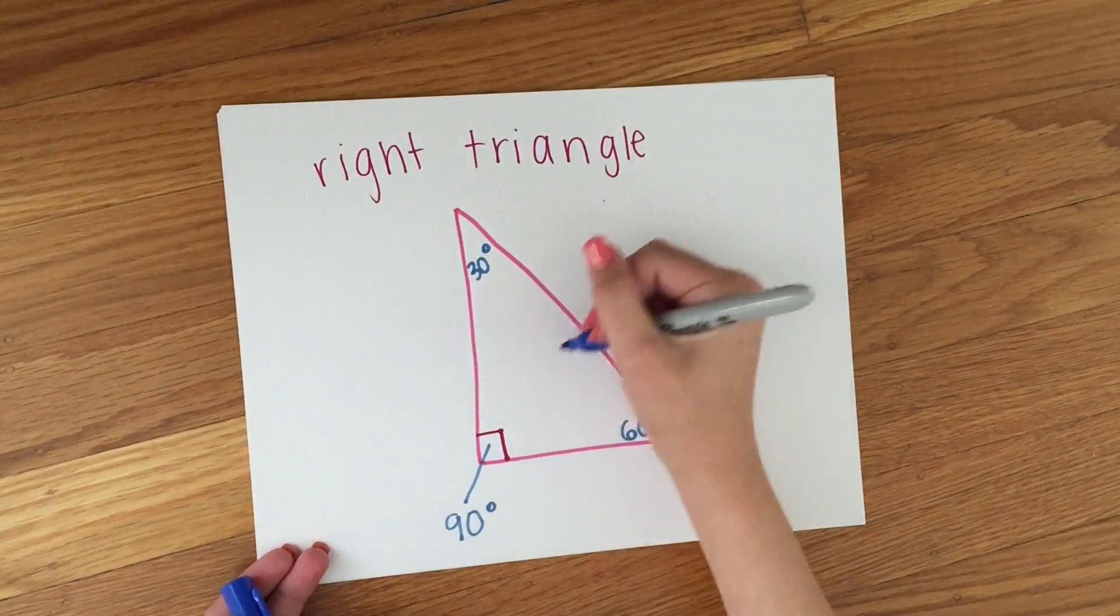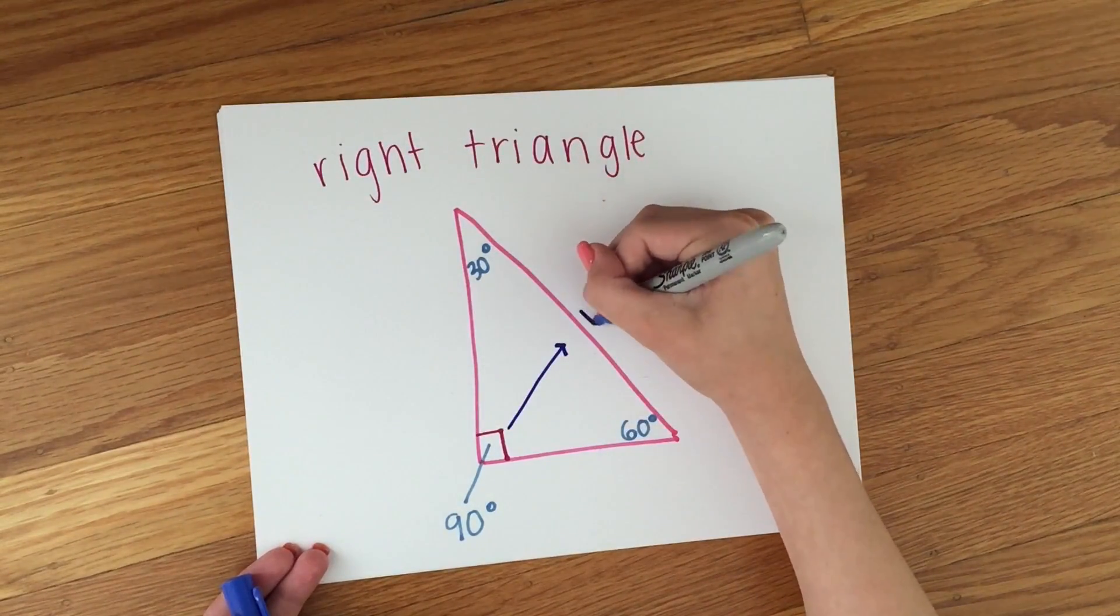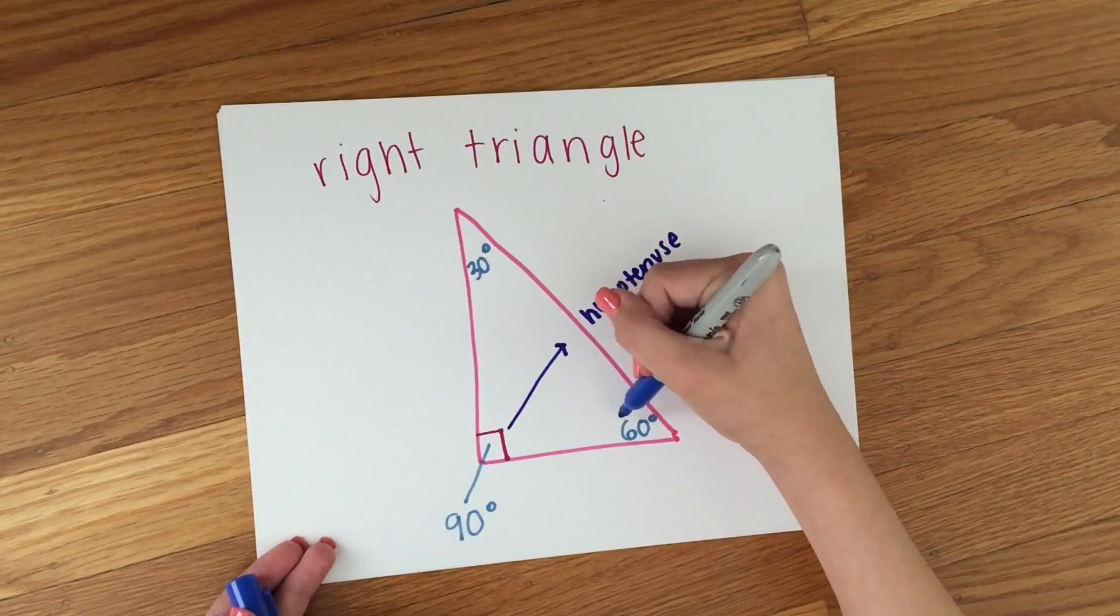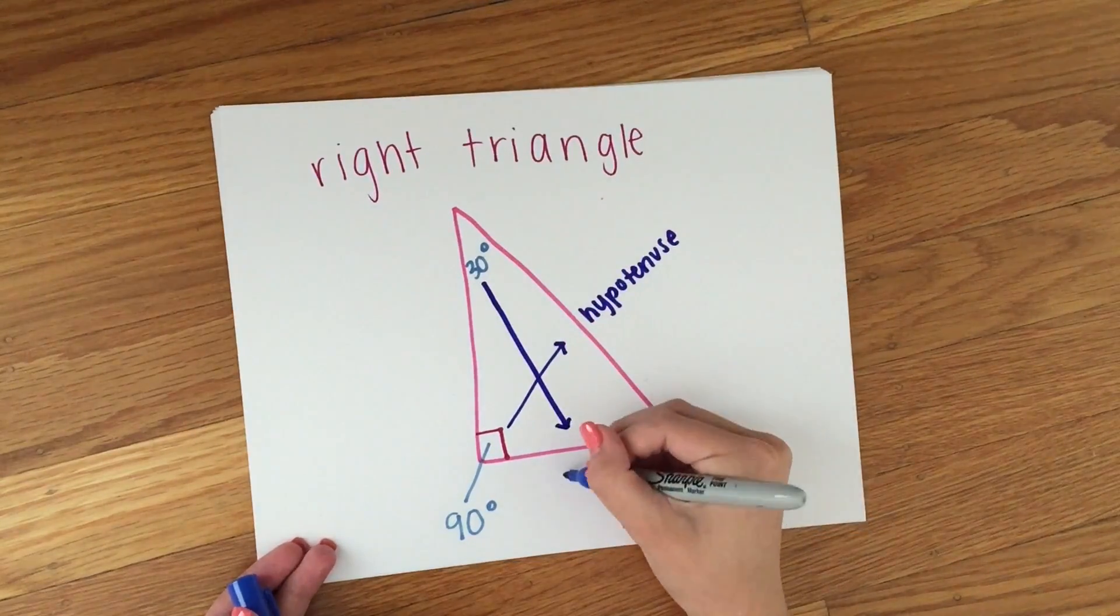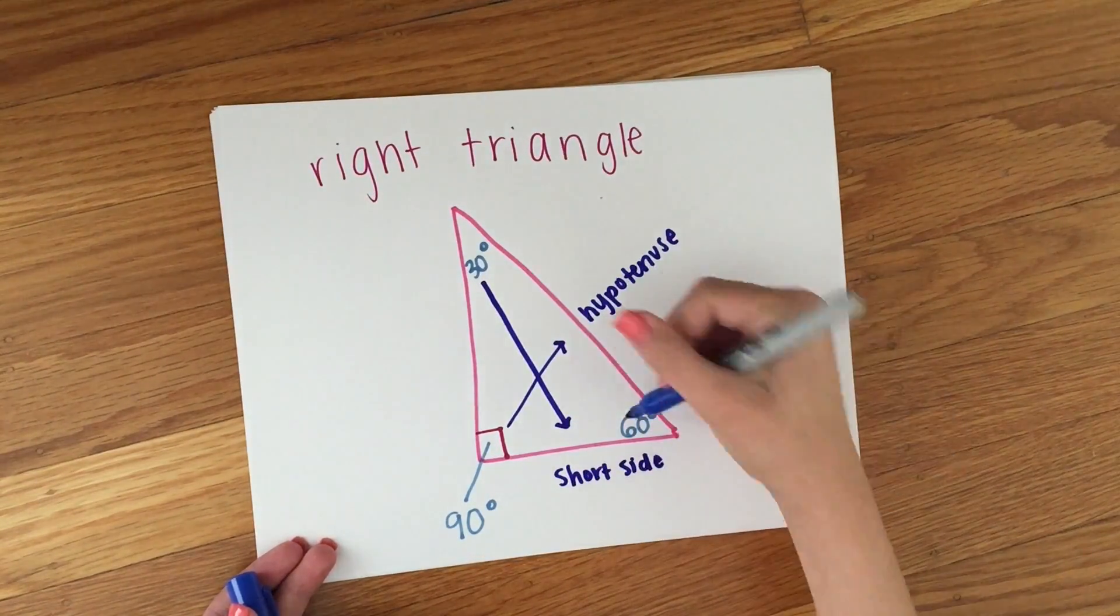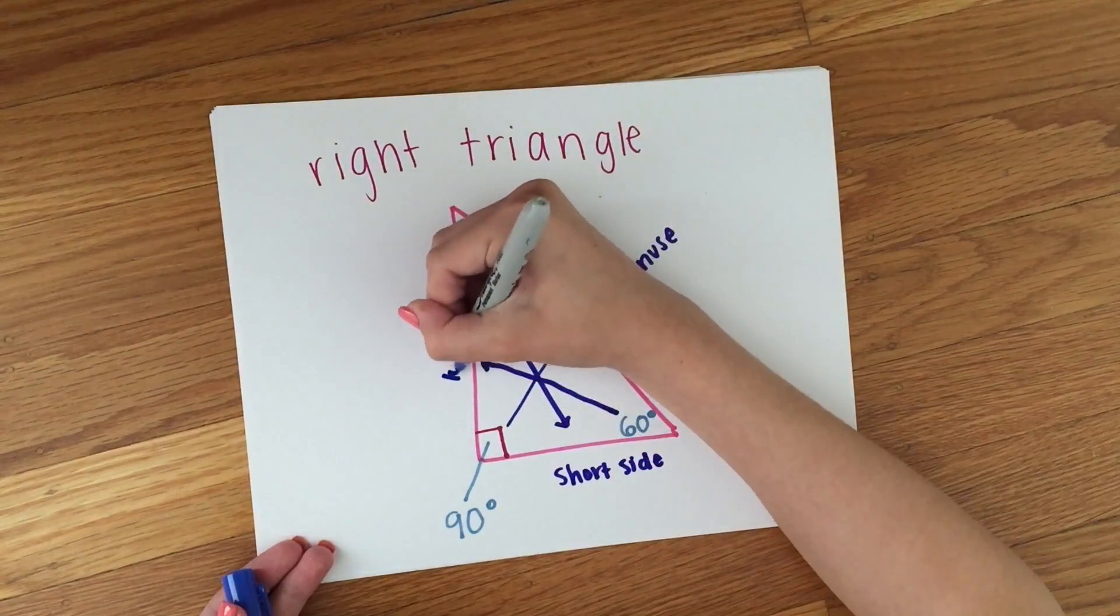The side across from the 90-degree angle is called the hypotenuse. The side across from the angle that's 30 degrees is called the short side or the short leg. And the last side across from the 60-degree angle is called the long side or the long leg.